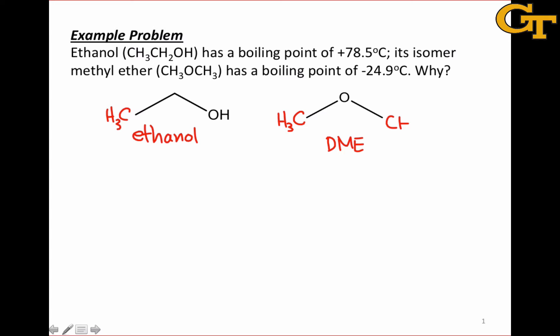These two molecules have the same molecular weight, but very different boiling points. The 78.5°C boiling point for ethanol is much higher than the boiling point of dimethyl ether, which is -24.9°C. In fact, dimethyl ether is a gas at room temperature, while ethanol is, of course, a liquid.